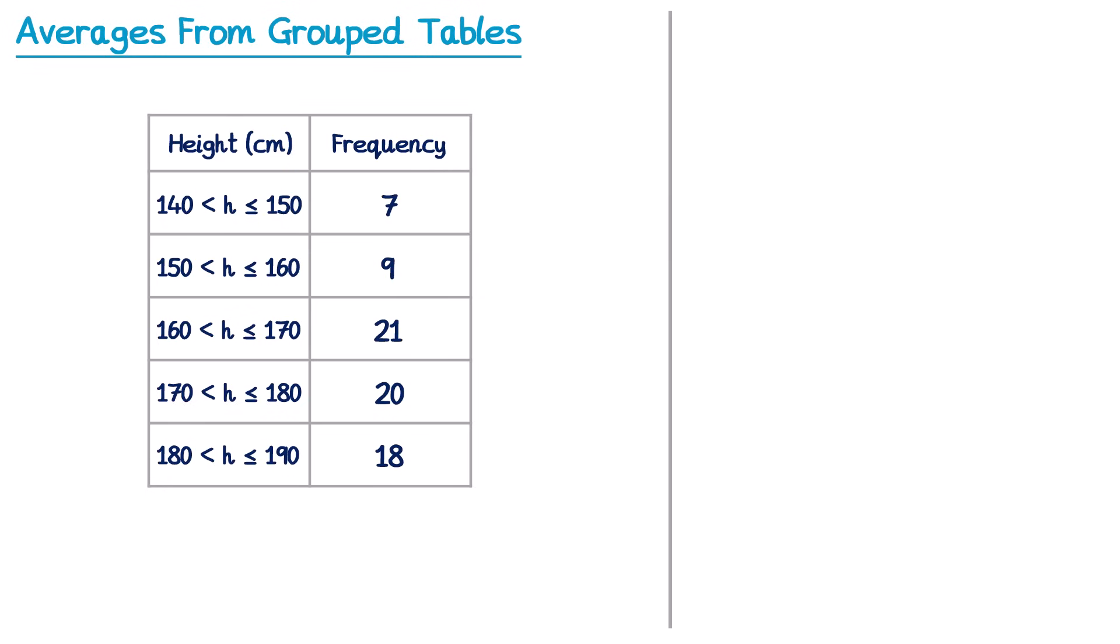Let's start by finding the mode. When we did a regular frequency table, the mode was the one that was most frequent. Now we're still going to look for the highest frequency, so looking down the frequency column the highest frequency is 21. Then when I look across to see the corresponding height, I don't actually have any of the individual height values. I just know they're in between 160 and 170.